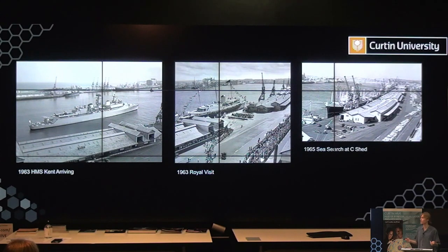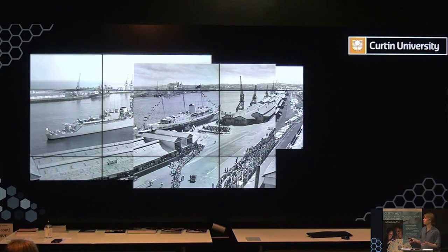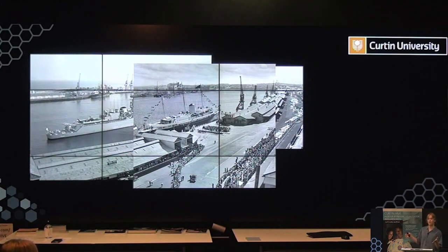Going back to our example, here are two images identified that capture alternative viewpoints of the harbour around a similar time. We have the HMS Kent arriving in 1963 — around the same time as the royal visit — and C Shed in 1965. When these two images are overlapped, the features cross over each other, but as noted, this process is not straightforward with automatic image stitching, as Photomerge cannot detect that these images are compatible.